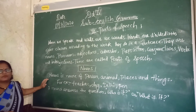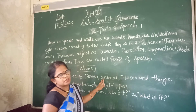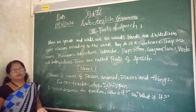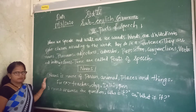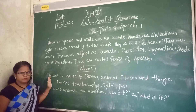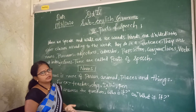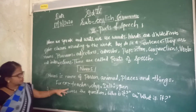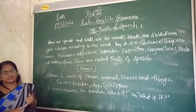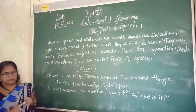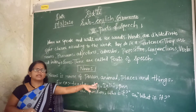Now what is the definition of noun? Noun is the name of a person, animal, places, and things. Noun means name. For example: teacher, dog, Danny, parents. Teacher is a person, dog is an animal, Danny is a pet. These are the names of persons, animals, places, and things.